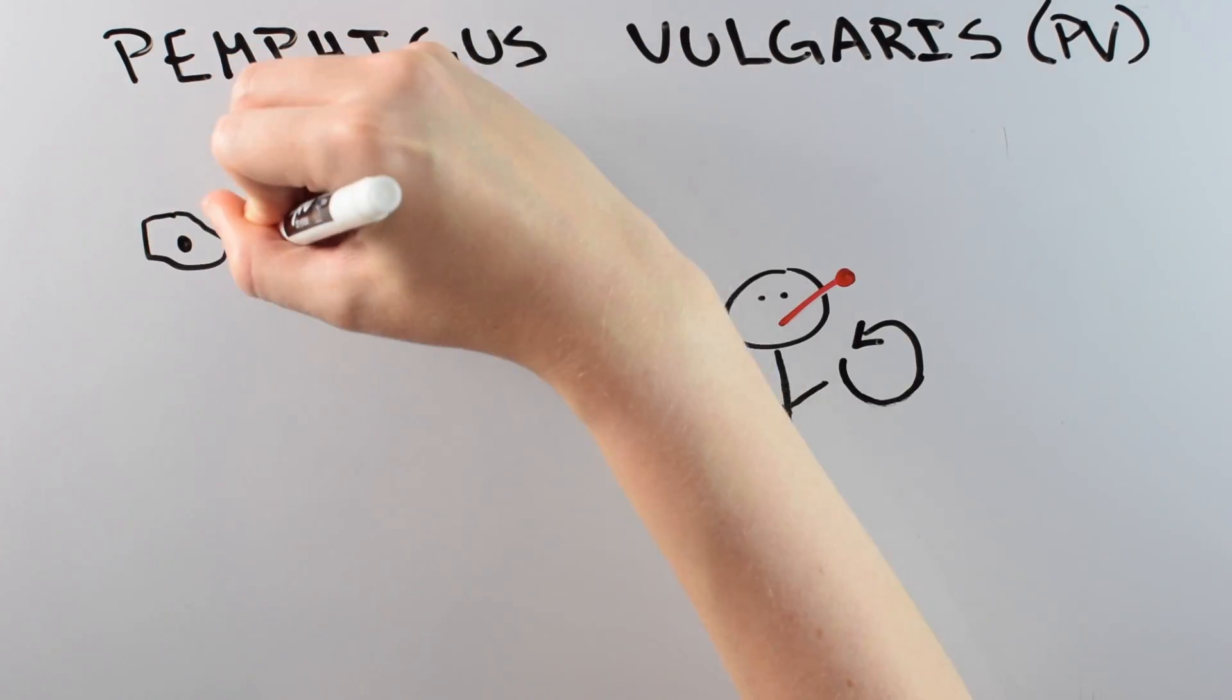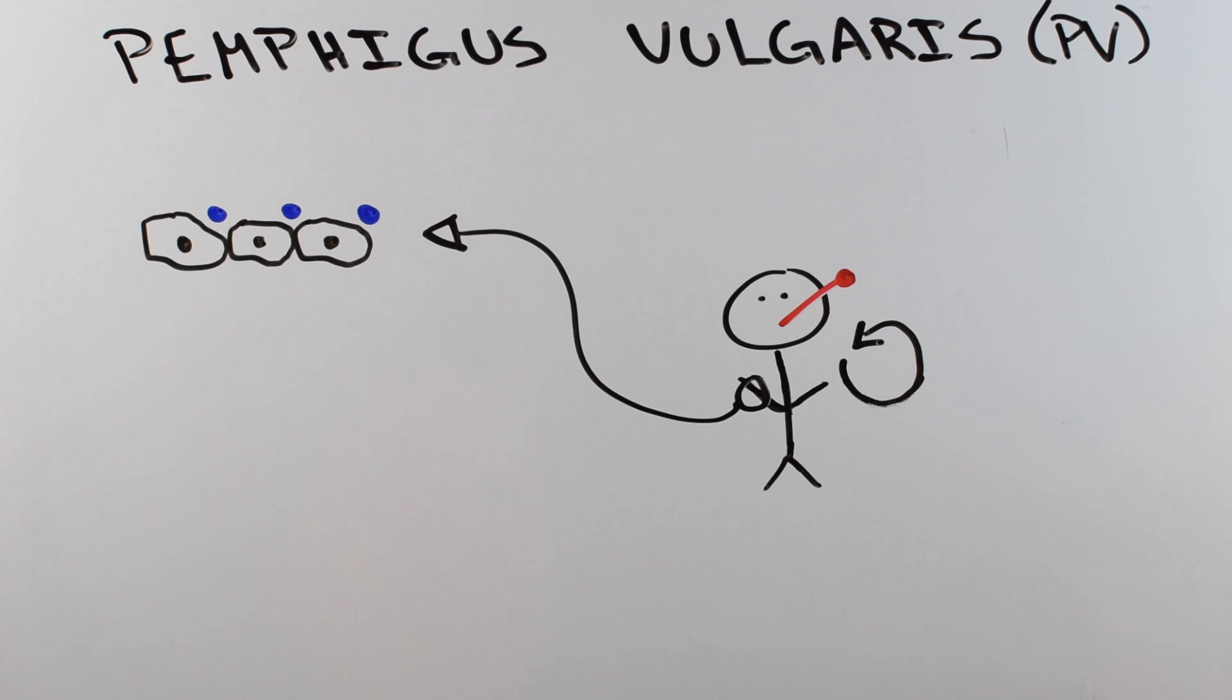PV is an autoimmune disease that affects the skin. It happens when the immune system recognizes the skin and attacks it, causing inflammation and cell death. This leads to huge skin blisters, kind of like having burns all over your body.